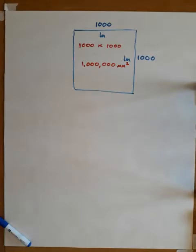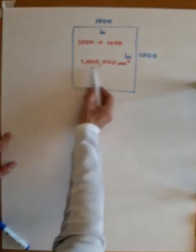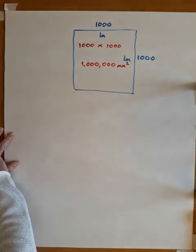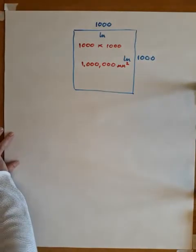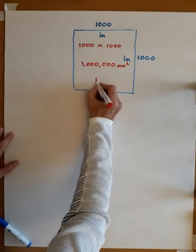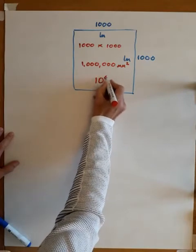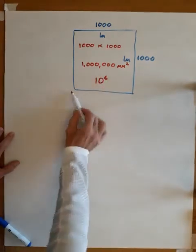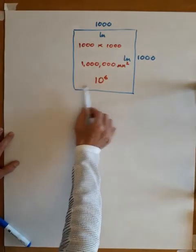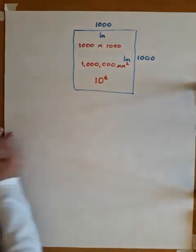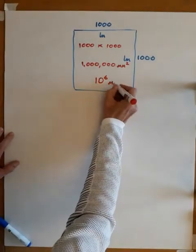So if we take this same number, one million, and apply standard form, we can use ten to the six. So in one square meter, there are ten to the six square millimeters.